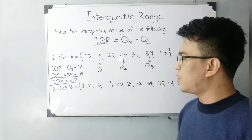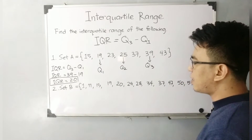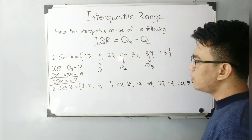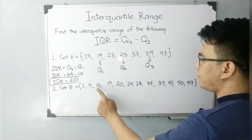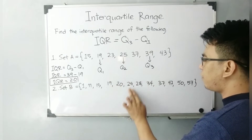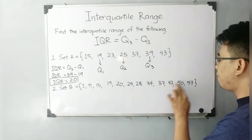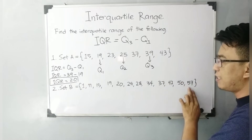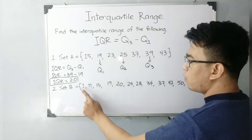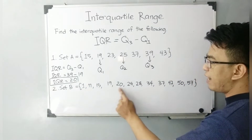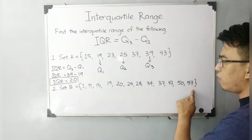Let's move on to item number two — set B. The elements are 1, 11, 15, 19, 20, 24, 28, 34, 37, 47, 50, and 57. Count the number of elements: 1, 2, 3, 4, 5, 6, 7, 8, 9, 10, 11, and 12. We have an even number of elements in set B.